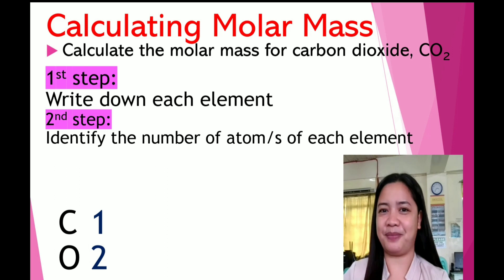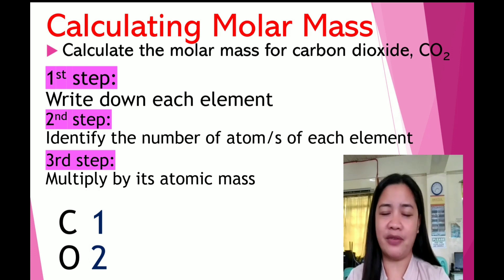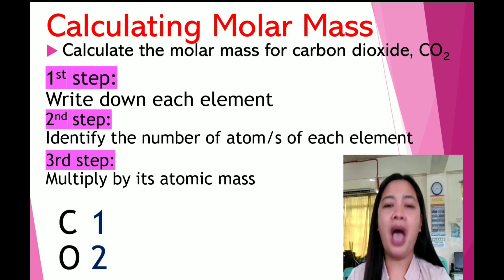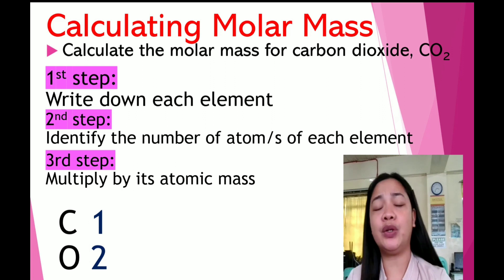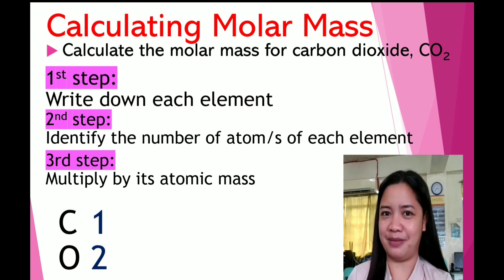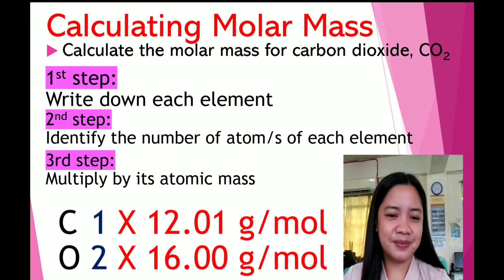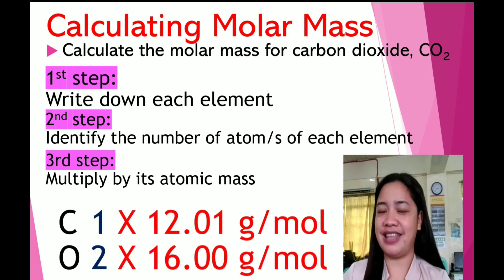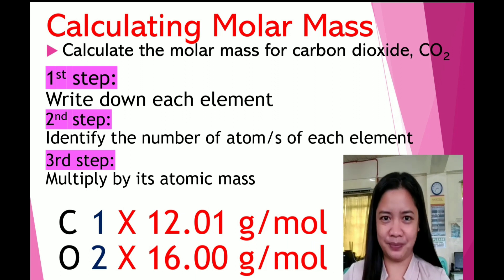The third step: you have to multiply the number of atoms of each element by its atomic mass. Look at your periodic table of elements. The atomic mass of carbon is 12.01 grams per mole, while for oxygen, that is 16.00 grams per mole.